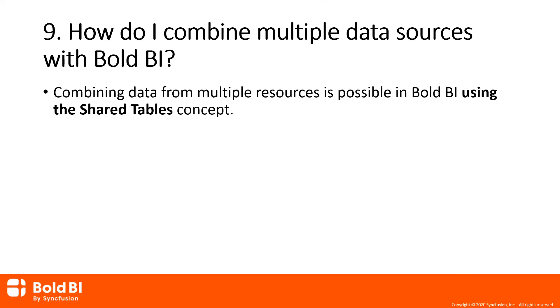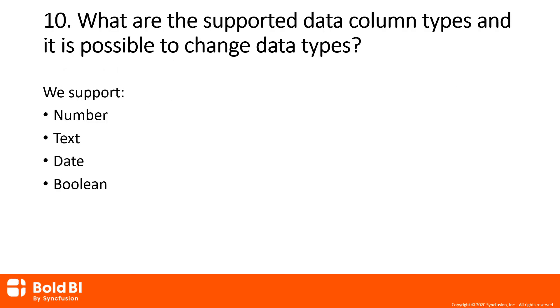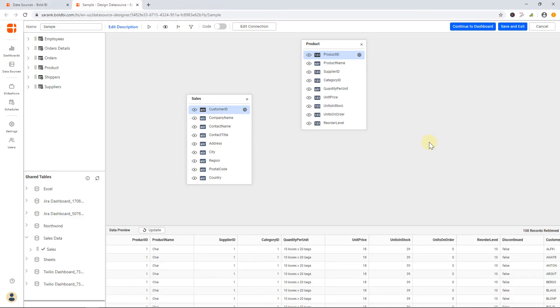Question number 10: what are the supported data column types, and is it possible to change data types? Bold BI supports number, text, date, and Boolean column types. In the data source designer, you can change the column type here.